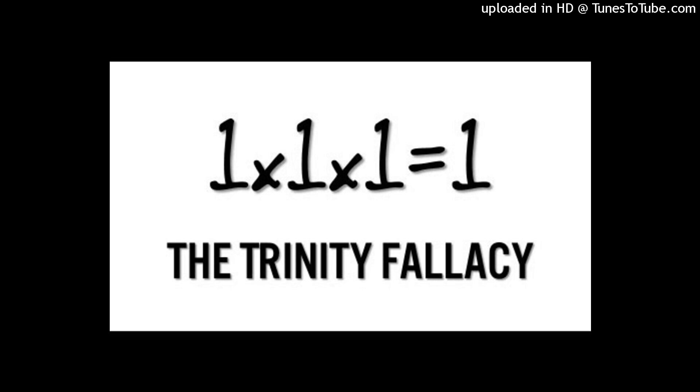In mathematics, when you multiply a number by three, the result is three times as large as the original number. For example, three times one equals three. If the Trinity is indeed three times larger than one, it should be represented by the number three. However, the Trinity is also claimed to be equal to one, which presents a clear contradiction.